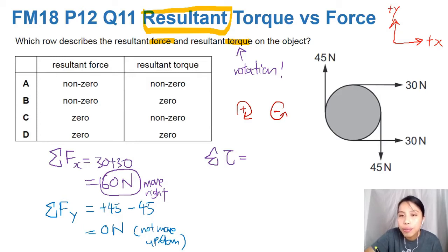So clockwise, we have 45, and 30, and 45. Those will be all the clockwise ones, so we give them a positive. So we have 45, plus 30, plus 45.